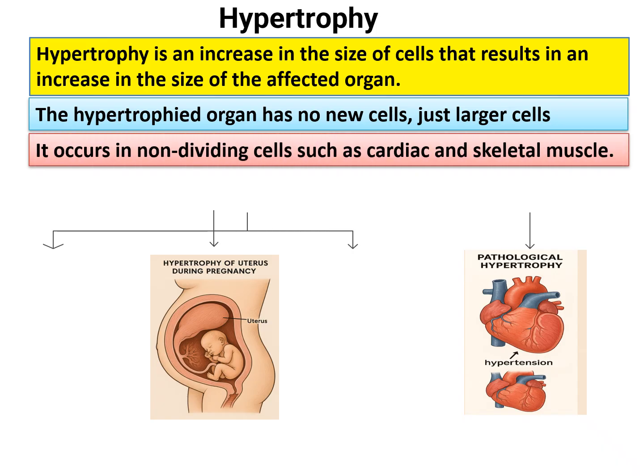Hypertrophy occurs in non-dividing cells such as cardiac muscle and skeletal muscle. These two muscles do not have the capacity for division — they are permanent cells. That is why they increase organ size only by increasing cell size, not number. Whereas smooth muscle, which has the capacity to replicate, increases size both by hypertrophy as well as hyperplasia.